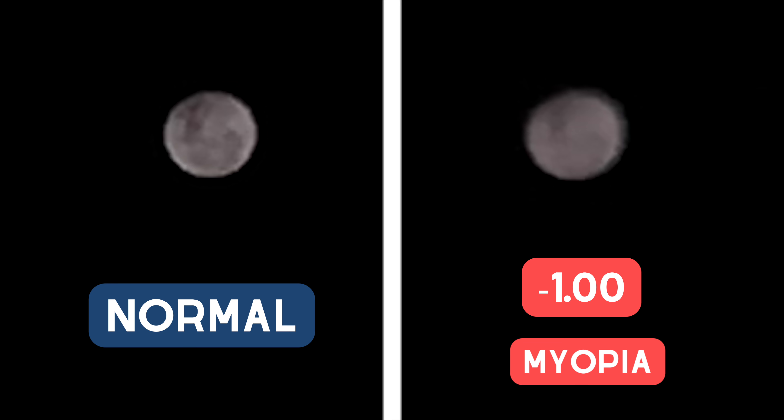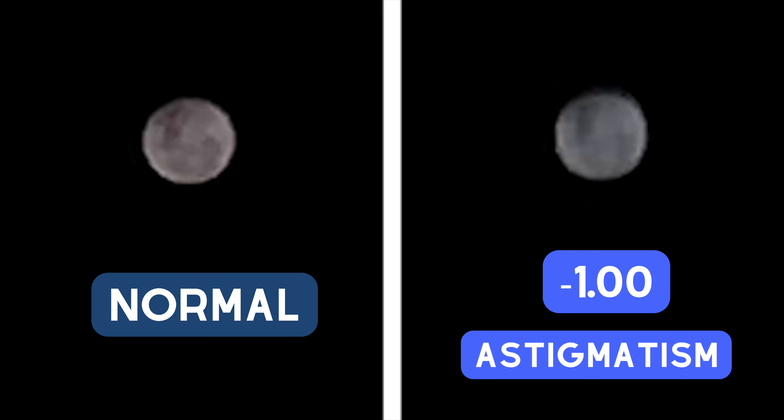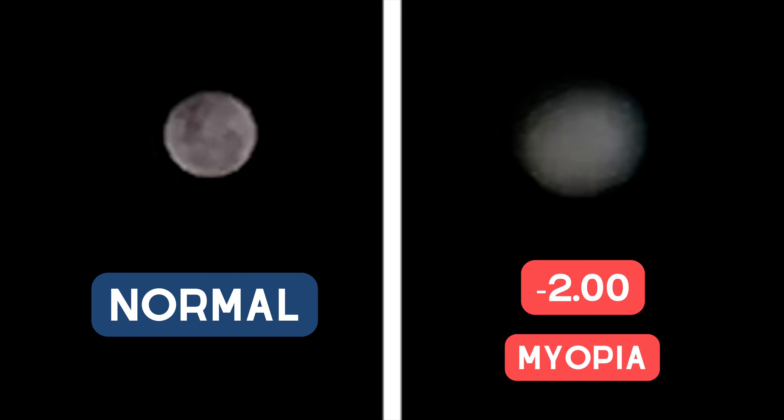We go back outside and it seems we have a full moon. I'm currently filming this with my smartphone, which is why the image quality is not the best, but it shouldn't stop us from comparing the differences. At one diopter of myopia, the details on the moon are lost and the edges become fuzzy. When it comes to astigmatism, the moon becomes stretched, making it seem more like an oval. At two diopters, the moon is unrecognisable and completely blurry. And with two diopters of astigmatism, the stretching becomes a lot more obvious.